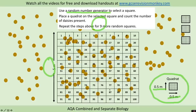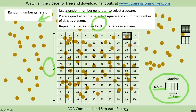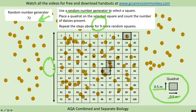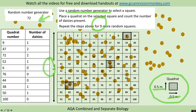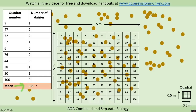For example, say our random number generator picks number 9 — we take our quadrat, place it on square 9, and count the number of daisies present. We then repeat that for another square: if it picks 47, we place our quadrat on square 47 and count the daisies; again for square 72. We repeat this for around 10 squares in total and then calculate a mean number of daisies per quadrat. I'll leave this as a decimal rather than rounding, as we need to use this number in a calculation to estimate the total number of daisies in the whole school field.